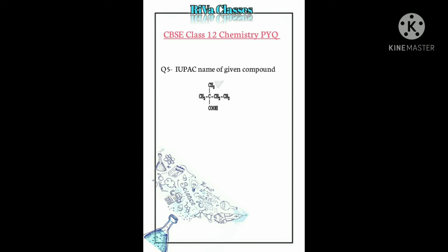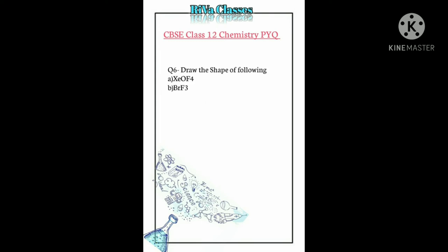Question number five: Write the IUPAC name of the following compound. Answer: 2,2-dimethylbutanoic acid.